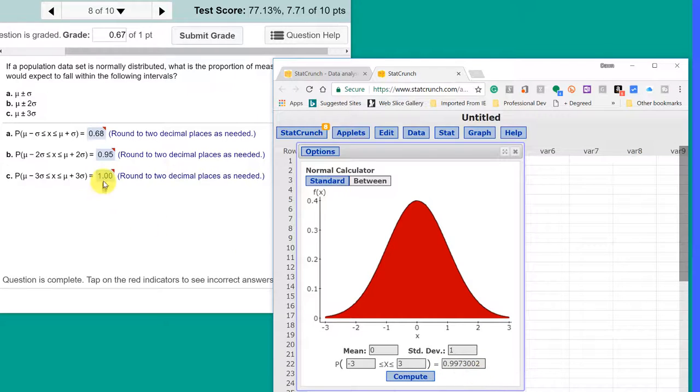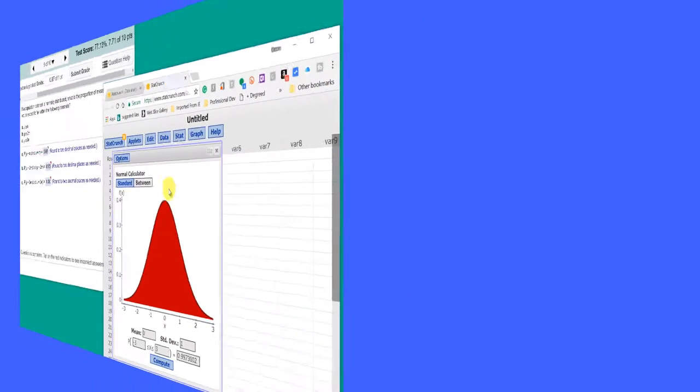If you round that to two decimal places, it's 1.00. So that's how fast you can do normal distribution probabilities using this StatCrunch normal calculator. I recommend you use it.